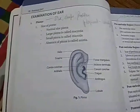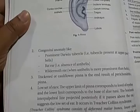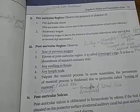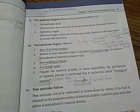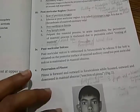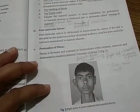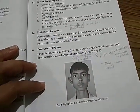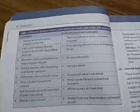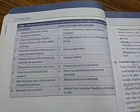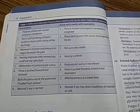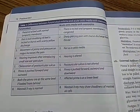Examination of the ear - what all will you examine? You will examine the pinna. Then you will examine the preauricular region, postauricular region, postauricular sulcus and protrusion of pinna. You will check all this in the pinna. Then difference between furunculosis and edema.